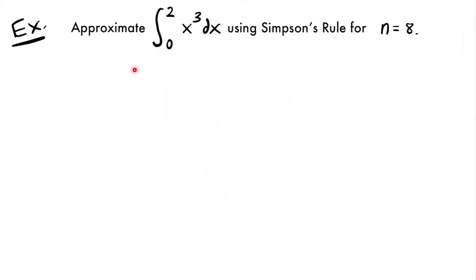Alright, welcome back. Let's start with this example. We want to approximate the integral from 0 to 2 of x cubed dx using Simpson's rule for n equals 8. What this means is that we're going to be approximating the area under x cubed from 0 to 2 using 8 subintervals. That's what n tells us — how many subintervals we are using for Simpson's rule.